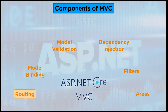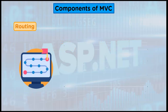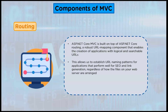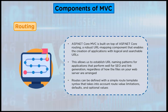Let's look at them one by one. First we have routing. ASP.NET Core MVC is built on top of ASP.NET Core Routing, a robust URL mapping component that enables the creation of applications with logical and searchable URLs. This allows us to establish URL naming patterns for applications that perform well for search engine optimization and link generation, regardless of how the files on your web server are arranged. Routes can be defined with a simple route template syntax that takes into account route value constraints, defaults, and optional values.